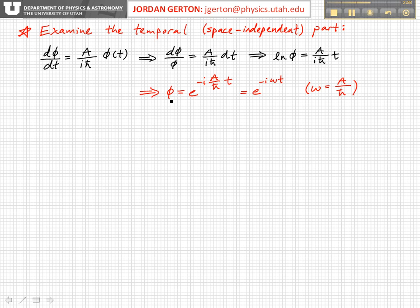So what we end up with is, if we take both sides of the equation and raise them to an exponential power, then we have φ is equal to e of ln φ, which is just equal to φ. So φ is equal to e to the minus i A over ℏ t.